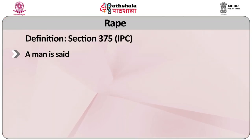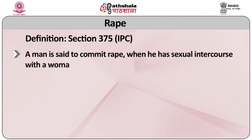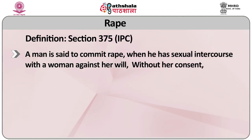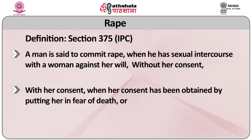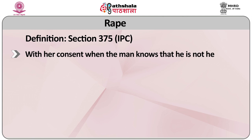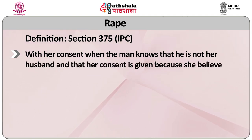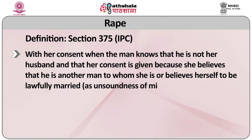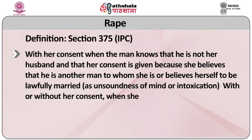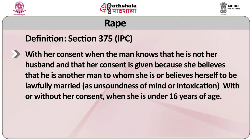As per Section 375 IPC, a man is said to commit rape when he has sexual intercourse with a woman against her will, without her consent, with consent obtained by putting her in fear of death or hurt, or when he knows he is not her husband but she believes him to be, or due to unsoundness of mind or intoxication, or with or without her consent when she is under 16 years of age.